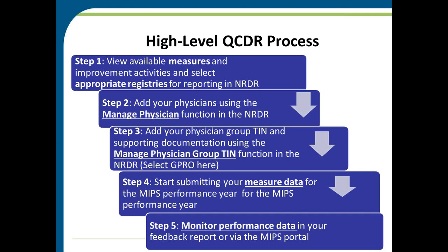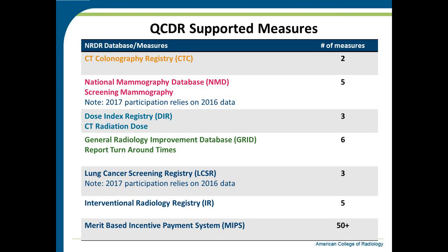Step four: after completing the administrative tasks, you would start submitting your measure data for the performance year. We have two types of measures — MIPS and non-MIPS — and because we have six different data registries, understanding those data submission requirements is critical to your success in the QCDR process. Step five: we are a quality improvement registry. We want you to monitor your performance overall and make use of your feedback reports in the MIPS portal. We have a number of quality measures approved by CMS for inclusion in our QCDR. Each of the six registries has anywhere from two to six quality measures that can be used for MIPS reporting.